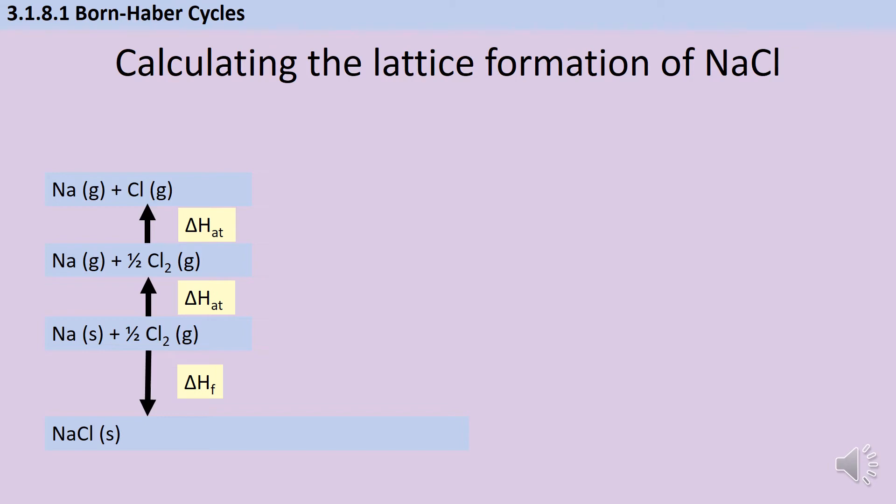Now I need to do the same thing for the chlorine. Here's the first point where people often make mistakes, because they look at the fact that we have half a mole of chlorine molecules and think, well, maybe I need to half the value of the delta H atomisation. But what you need to remember is that the standard enthalpy of atomisation is the value for forming one mole of gaseous atoms. So even though we only have half a mole of molecules, that doesn't matter because we are making one mole of atoms. So we need to use the full value for delta H atomisation.